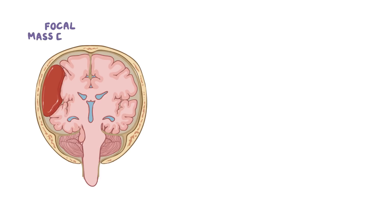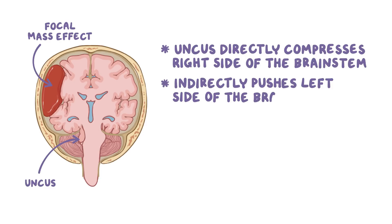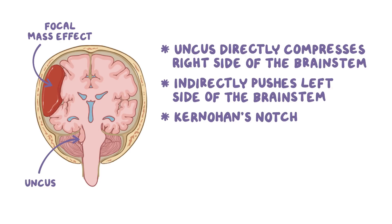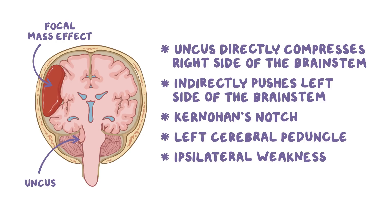If there's a focal mass effect on the right side of the skull, it increases intracranial pressure and squeezes the uncus down onto the brain stem. The uncus isn't only directly compressing the right side of the brain stem, but indirectly it's also pushing the left side of the brain stem against the free edge of the tentorium, forming what's called Kernohan's notch. The compressed part — the left cerebral peduncle — is rich in motor fibers traveling from the cortex on the left side of the brain to muscles on the right side of the body. This injury results in weakness on the same side as the focal mass effect, called ipsilateral weakness — a false localizing sign.